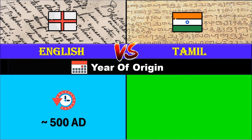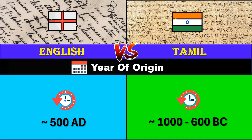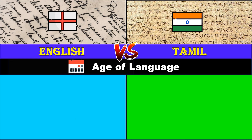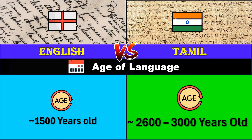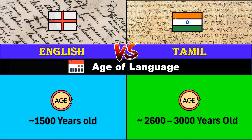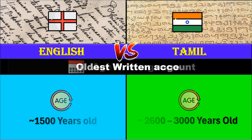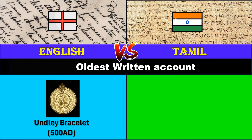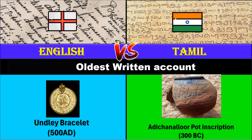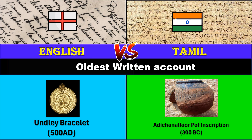Year of origin: around 500 AD for English, between 1,000 and 600 BC for Tamil. Age of language: around 1,500 years old for English, between 2,600 to 3,100 years old for Tamil. Oldest written account: only bracelet dated to 500 AD for English; the Adichanallur pot inscription dated to 300 BC for Tamil.